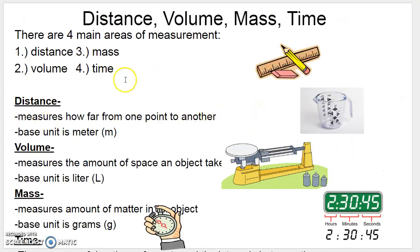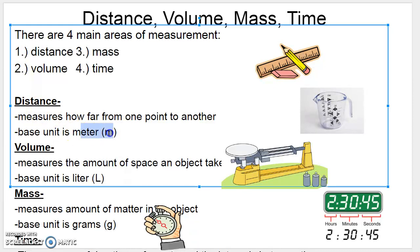In terms of base units, there's four main areas of measurement that we'll be looking at in this class. You'll be taking measurements for distance, volume, mass, and time. Each one of these has a base unit in the metric system. For distance, the base unit is the meter. We abbreviate that with the lowercase letter m. For volume, the base unit is the liter, and we abbreviate that with an uppercase letter L. And then you have mass. Mass is measured in grams, or the base unit is grams, and we abbreviate that with a lowercase letter g.